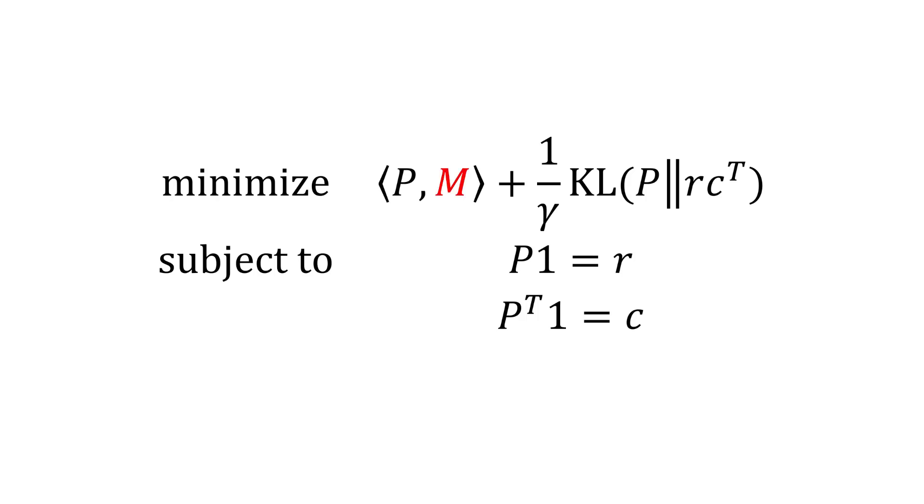Given a real matrix M, optimal transport finds the positive matrix P that minimizes the inner product between M and P and an entropy regularization term. We also require P to satisfy row sum and column sum constraints. Here the scalar quantity gamma controls the strength of the regularization term, and vectors R and C encode the row sum and column sum constraints. They must each sum to one.